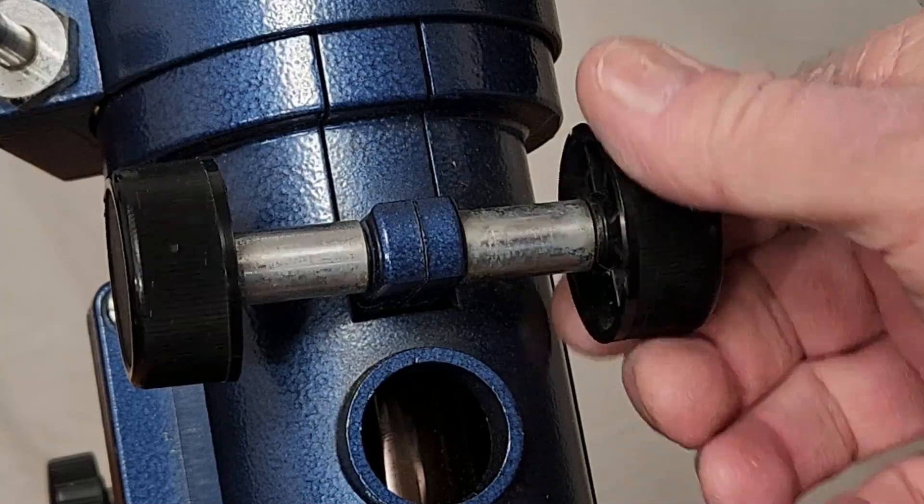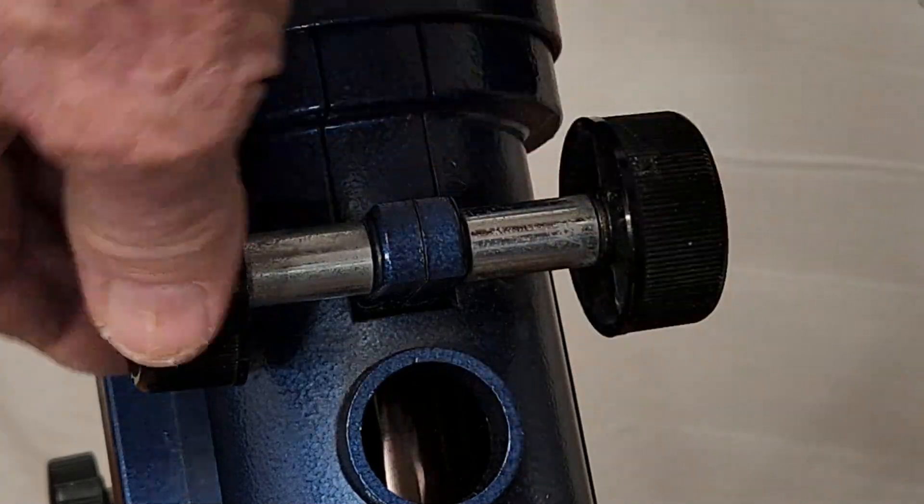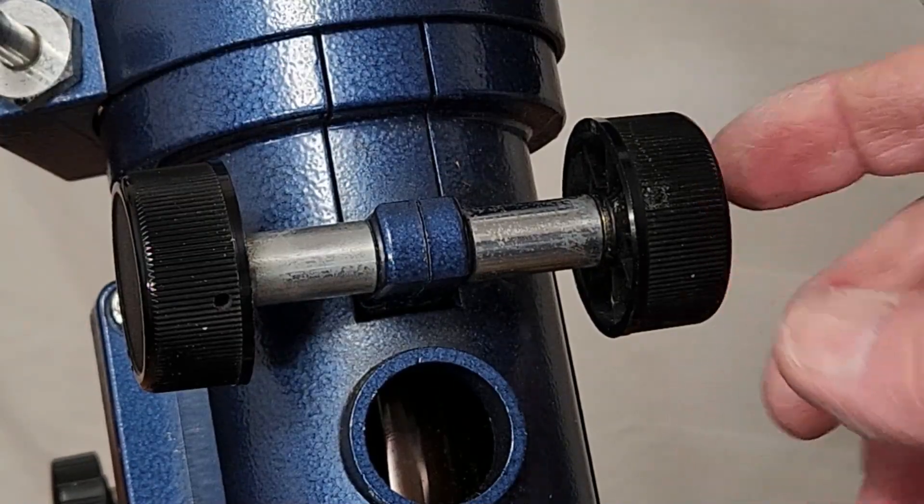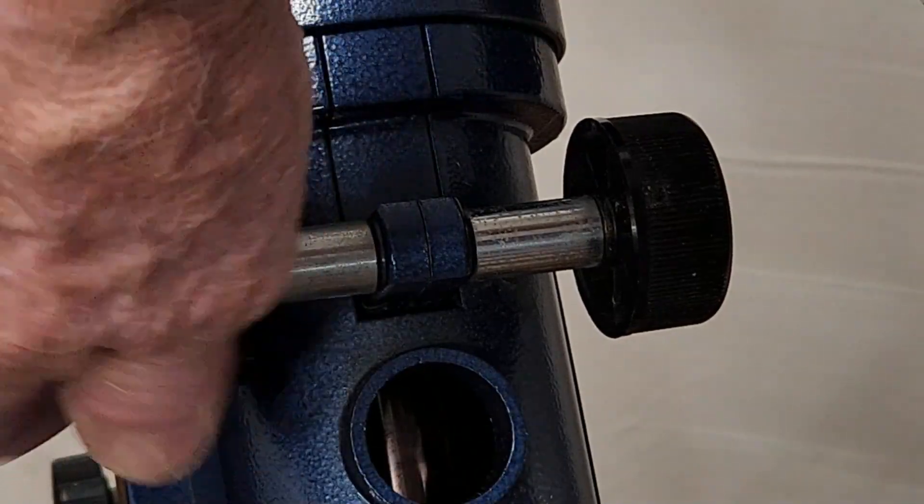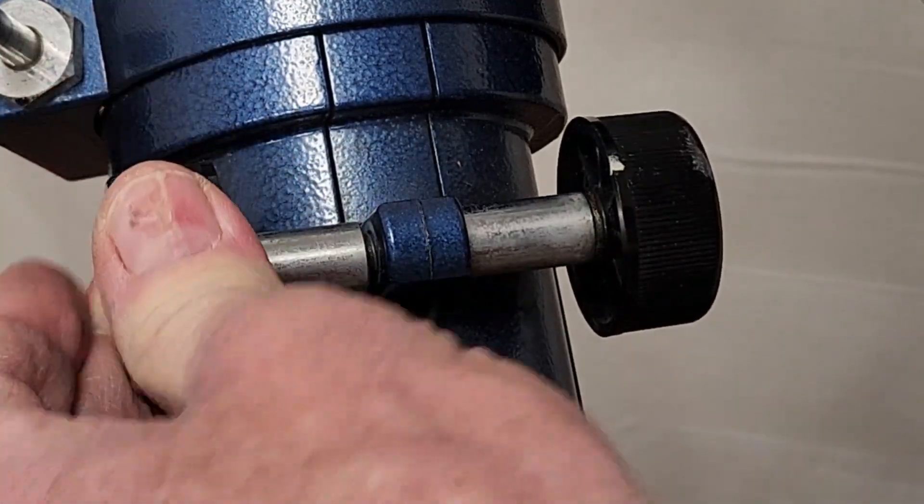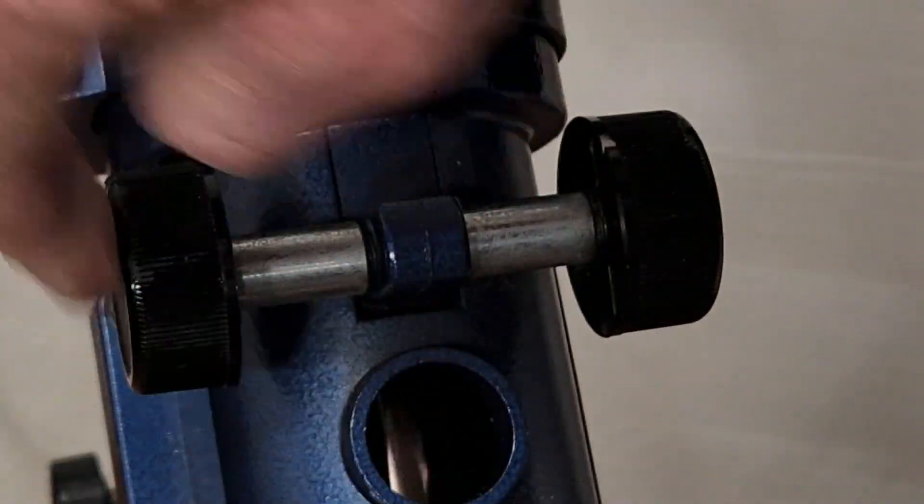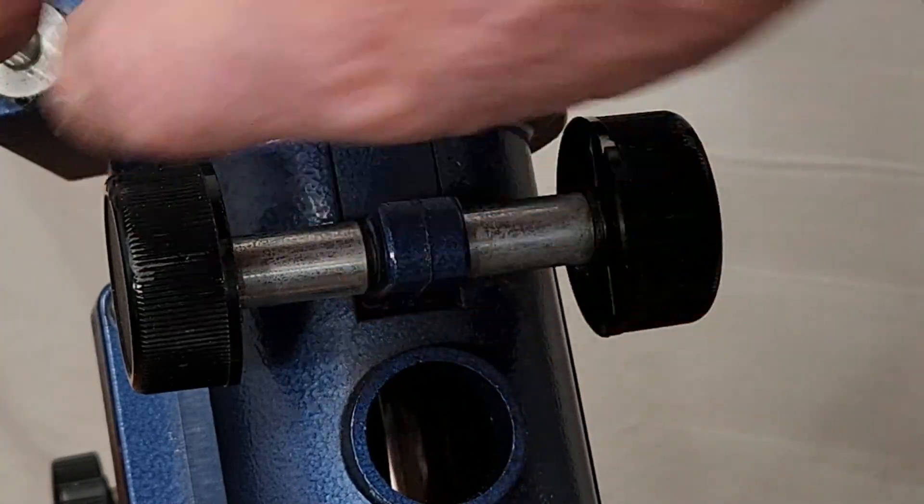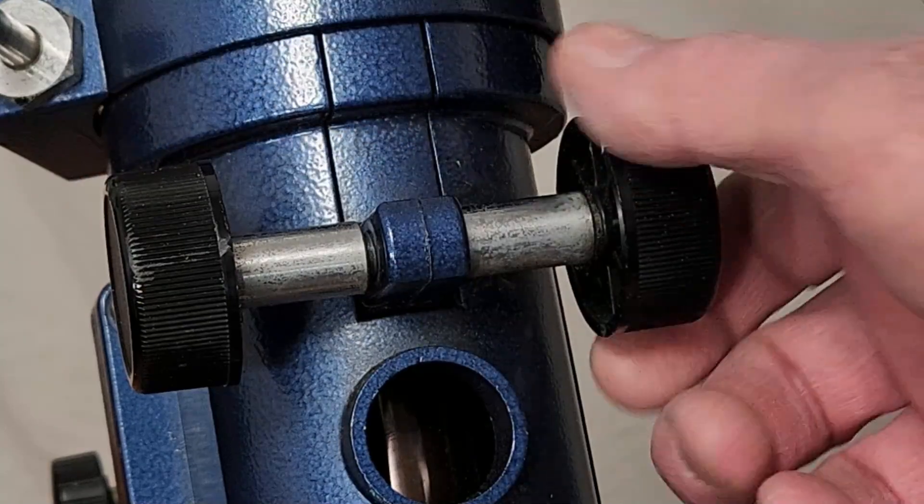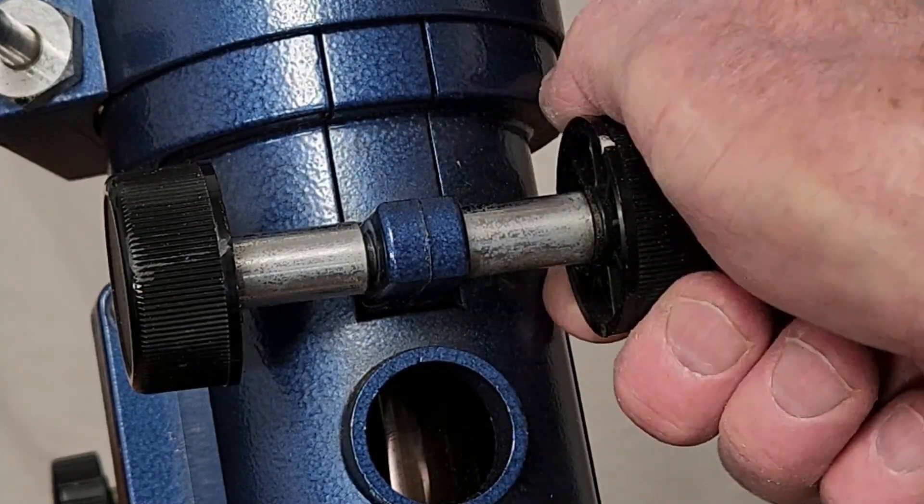The interesting thing about this is if you turn it this way and go righty tighty with this one, it doesn't do anything. You have to go lefty tighty. So if you're on this knob it's lefty tighty and on this one it's righty tighty. And if you're east of the meridian or west of the meridian it will change. So it will be either lefty loosey or righty tighty. I get very confused with this thing.